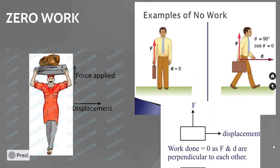If the angle between force and displacement is 90 degrees — that is, if displacement is perpendicular to the force applied — then the work done is zero. For example, a person carrying luggage and walking horizontally: the force is applied upward but displacement is horizontal, so the angle is 90 degrees and work done is zero.